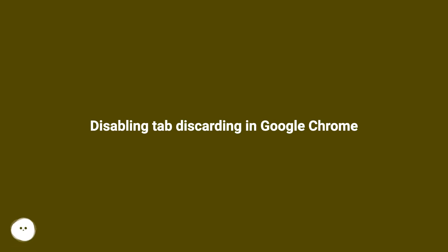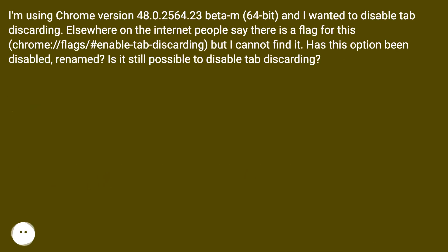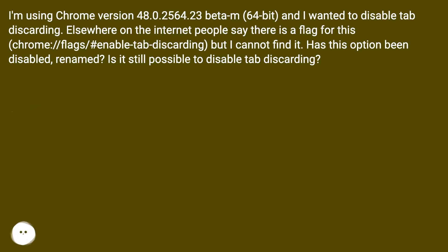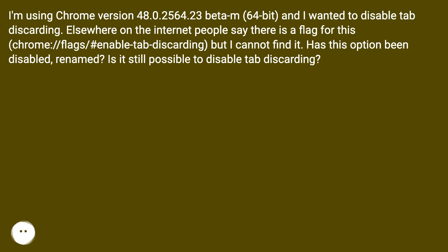Disabling tab discarding in Google Chrome. I'm using Chrome version 48.0.2564.23 beta 64-bit and I wanted to disable tab discarding. Elsewhere on the internet, people say there is a flag for this: chrome://flags#enable-tab-discarding, but I cannot find it. Has this option been disabled or renamed? Is it still possible to disable tab discarding?